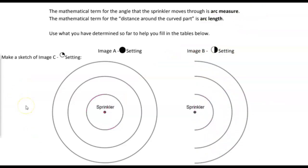Now, make a sketch of image C. Notice they gave us the two settings here, but we didn't get the quarter one, so we would have to draw that ourselves. If I'm just going to use the picture that I have here for the quarter setting, I would want to take half of this one over here.